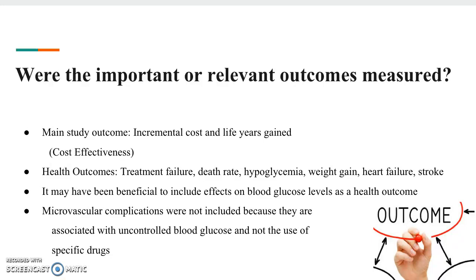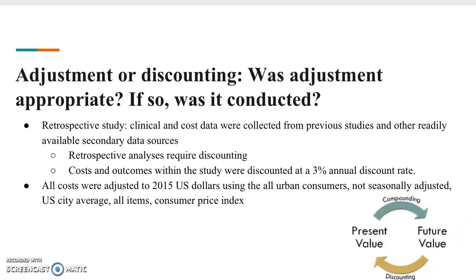In addition, microvascular complications were not included because they are associated with uncontrolled blood glucose levels and not the use of specific drugs. Regarding discounting: since this was a retrospective study, clinical and cost data were collected from previous studies and secondary data sources. Retrospective analyses required discounting, and costs and outcomes were discounted at a 3% annual discount rate, which was appropriate. All costs were adjusted to 2015 U.S. dollars using the All Urban Consumers Not Seasonally Adjusted U.S. City Average All Items Consumer Price Index.